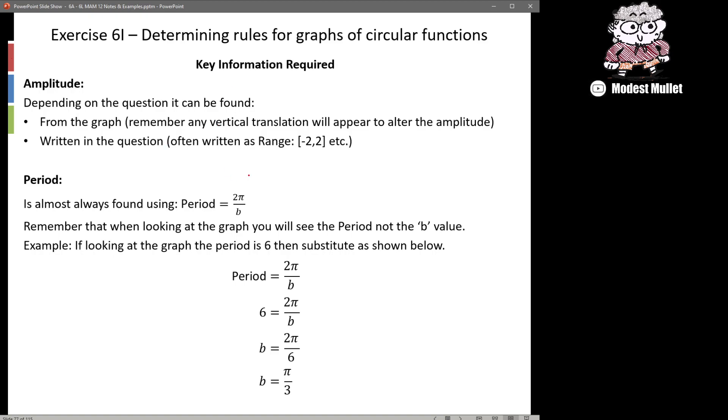The amplitude can be found from either two bits of information. Generally from the graph it's just looking at what's its max and min values and then halving the difference between that and that's going to be your amplitude. And that can also take into account vertical translation. So maybe the max is up at 5 and the min is negative 1, while the difference between those is 6, so we halve that and we get our amplitude is equal to 3.